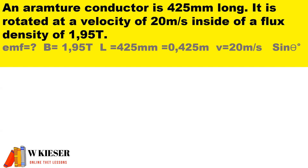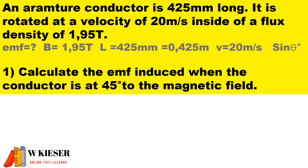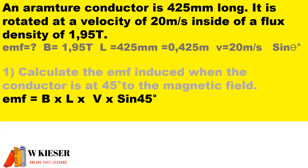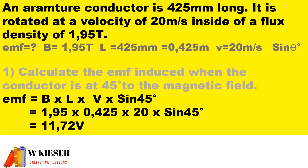We're dealing with a sinusoidal waveform, so we're dealing with sine theta, which is the phase angle. Number one: calculate the EMF induced when the conductor is at 45 degrees to the magnetic field. To calculate the EMF at 45 degrees, we calculate the maximum EMF as B × L × v, then substitute sine 45 multiplied by the maximum EMF. Therefore, at 45 degrees, we will have 11.72 volts.